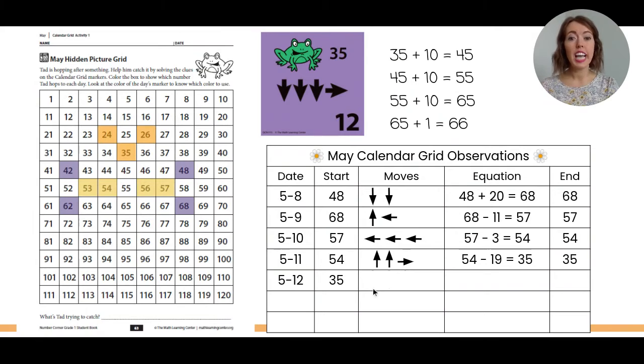So we went down, down, down, right. So that was adding 10 plus 10 plus 10, and then one more. Three 10s is 30, and then one more is 31.